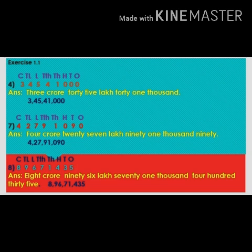Question number eight: the given digits are 8,96,71,435. The same way, first we write the place values above the digits — ones, tens, hundreds, thousands, ten thousands, lakhs, ten lakhs, crore. Now we write the number name: eight crore, 96 lakhs, 71 thousand, four hundred and thirty-five. According to the period we put the comma: 8 comma 96 comma 71 thousand comma four hundred and thirty-five.